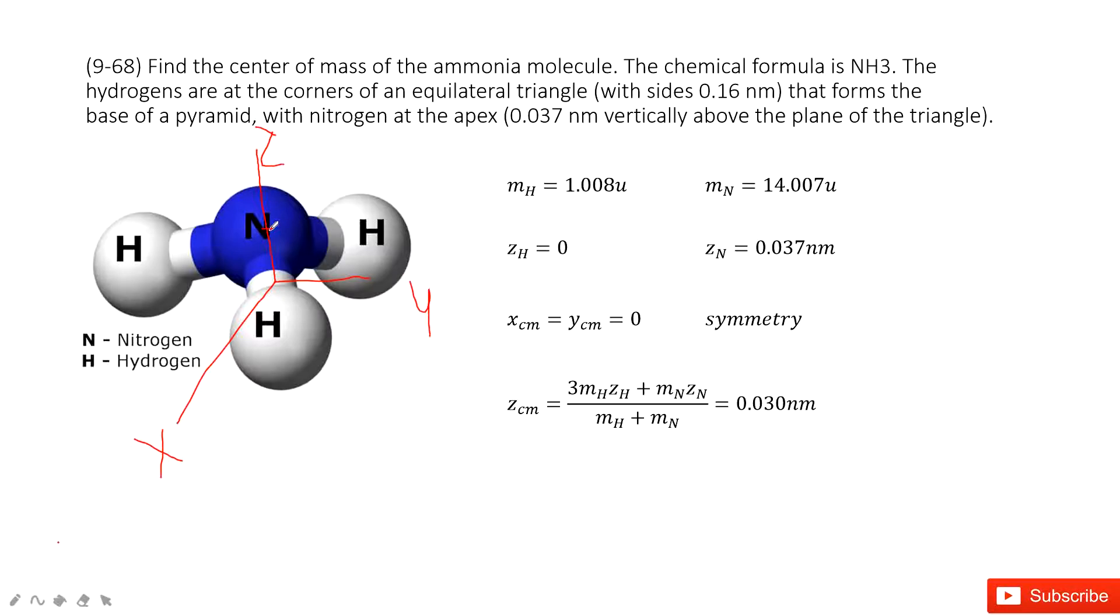At the z component, we can consider zh to be zero because it's just at the surface, at the bottom. We take it as a reference surface. So zn is given. Now how can we determine the center of mass at the z component?